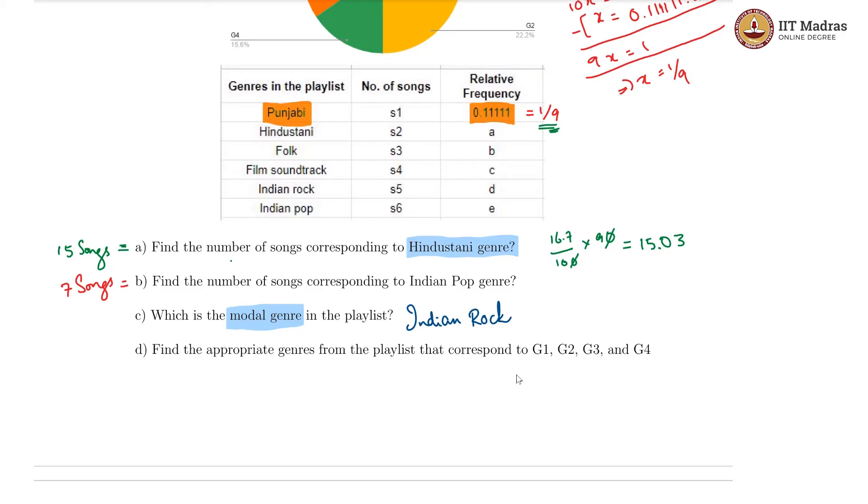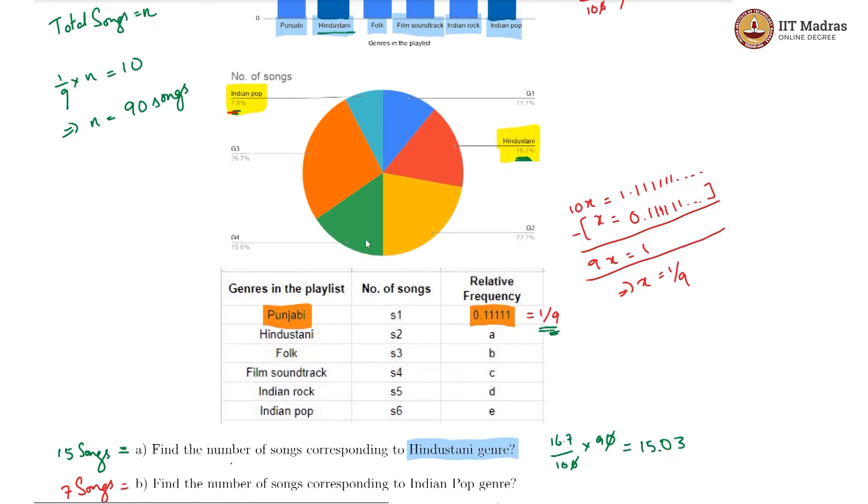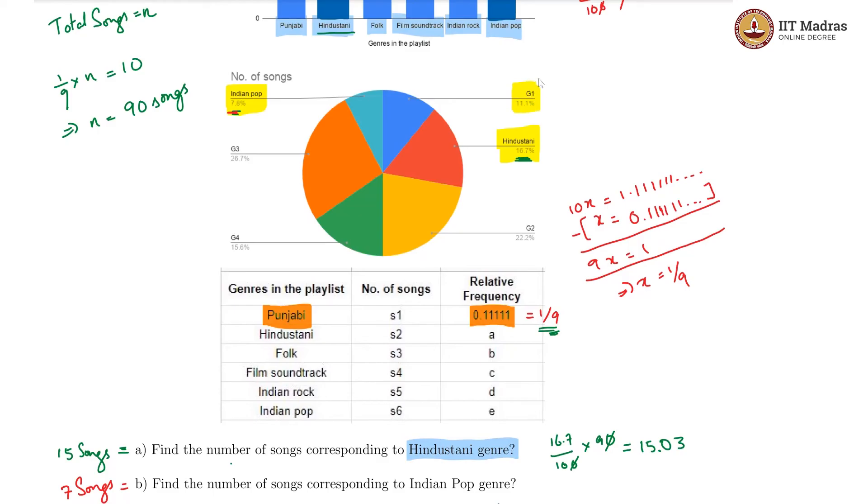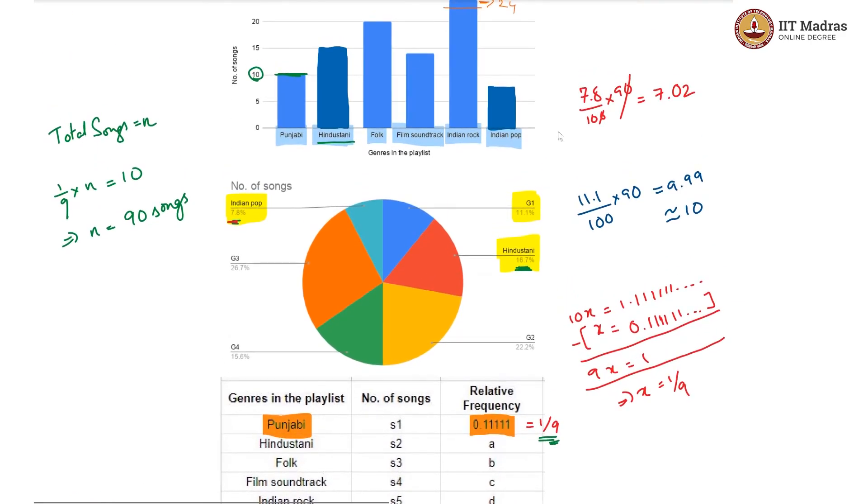Finally, we are being asked, find the appropriate genres from the playlist that correspond to G1, G2, G3, G4, which are what are here. We know that G1 is 11.1 percent. So 11.1 percent of 90 would be again 11.1 by 100 into 90, which is basically 9.99. So this must be roughly 10 songs. Let us see which genre has 10 songs, it is Punjabi. So G1 must be Punjabi.